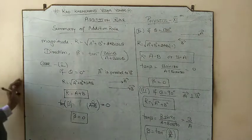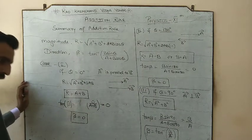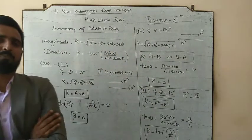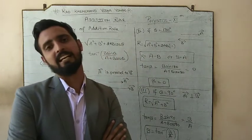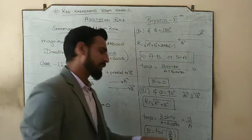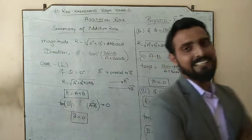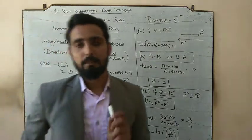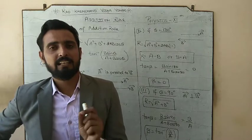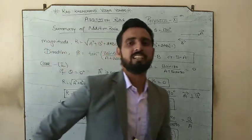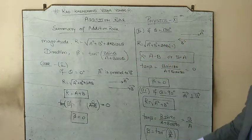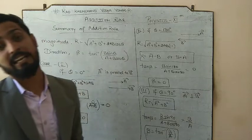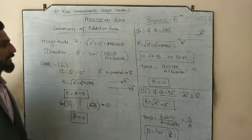If you remember these special cases, they save time in numericals. When the two vectors are at 90°, you can directly use the formula beta = tan⁻¹(b/a). But do not forget the definition of beta — it is the angle made by the resultant with the a vector. That is why it is b/a. If beta were the angle with the b vector, the formula would become a/b.